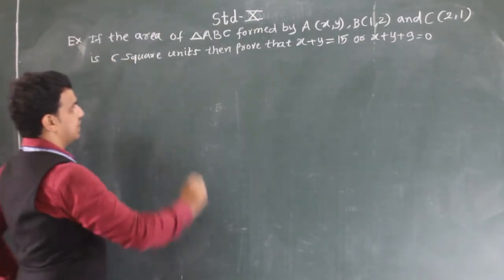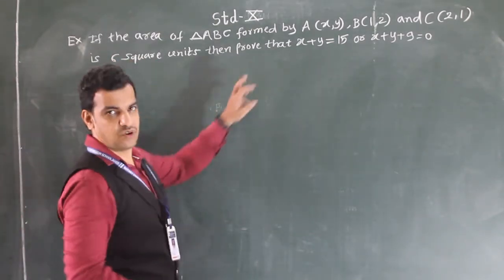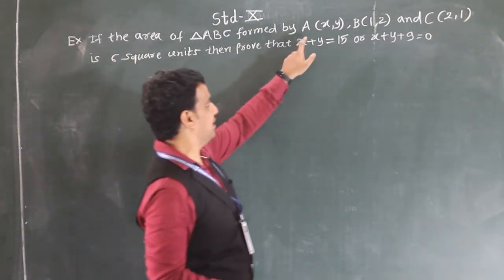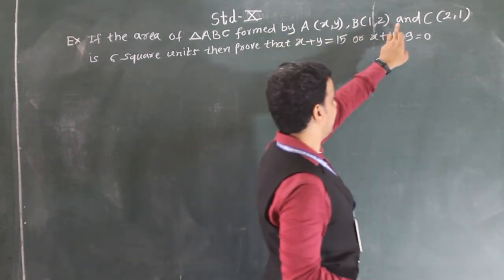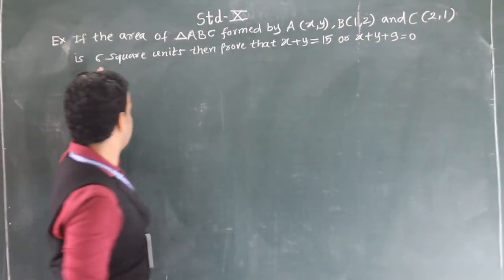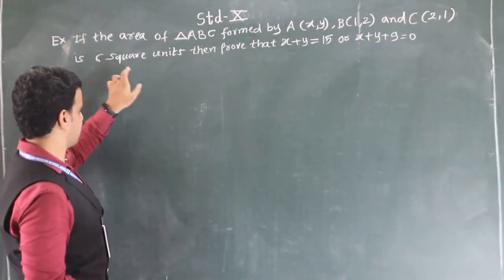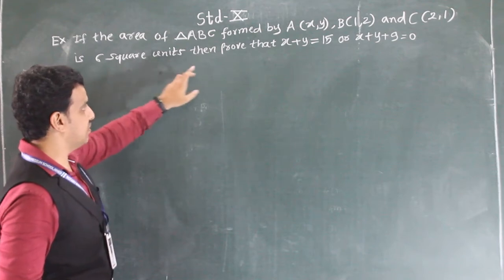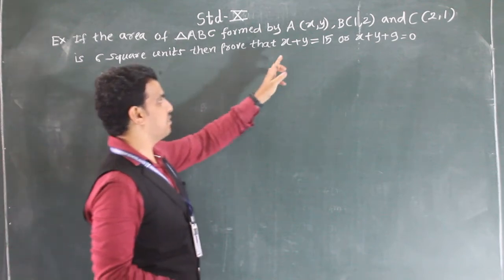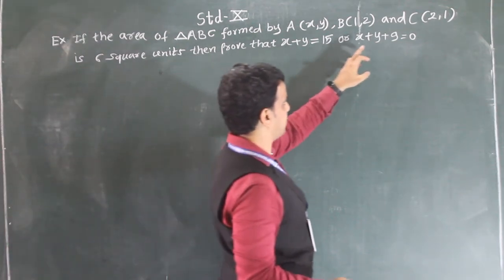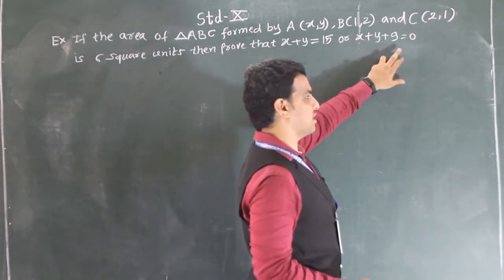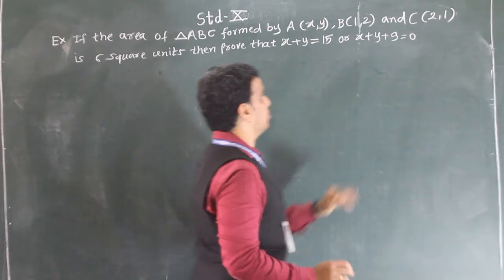Next example: if the area of triangle ABC formed by A(x, y), B(1, 2) and C(2, 1) is 6 square units, then prove that x + y = 15 or x + y + 9 = 0.